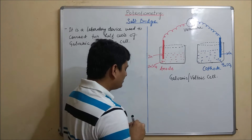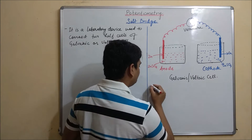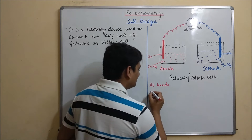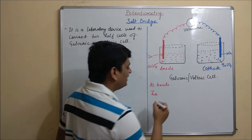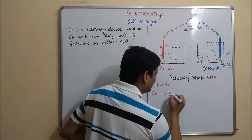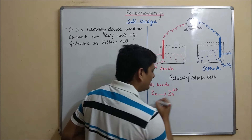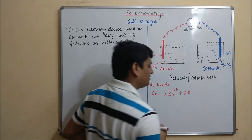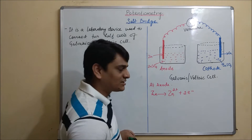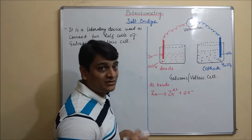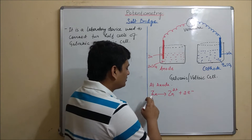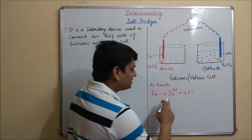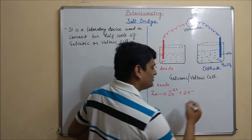First, taking the example of anode: Zn metal will be converted into Zn²⁺ and it will release two electrons. Oxidation takes place here because loss of electrons is known as oxidation. So Zn loses two electrons, and that is why this reaction is known as oxidation.